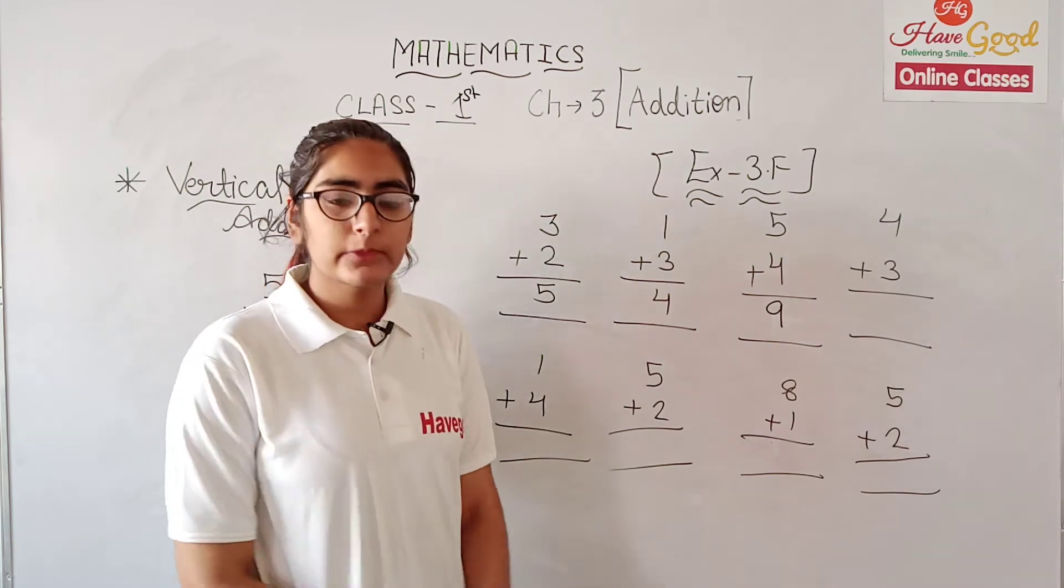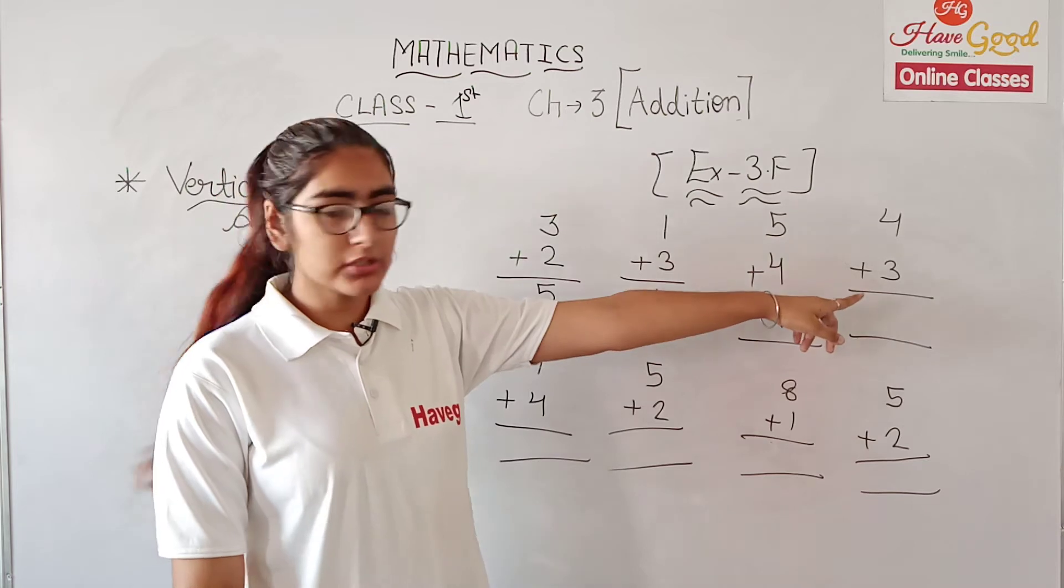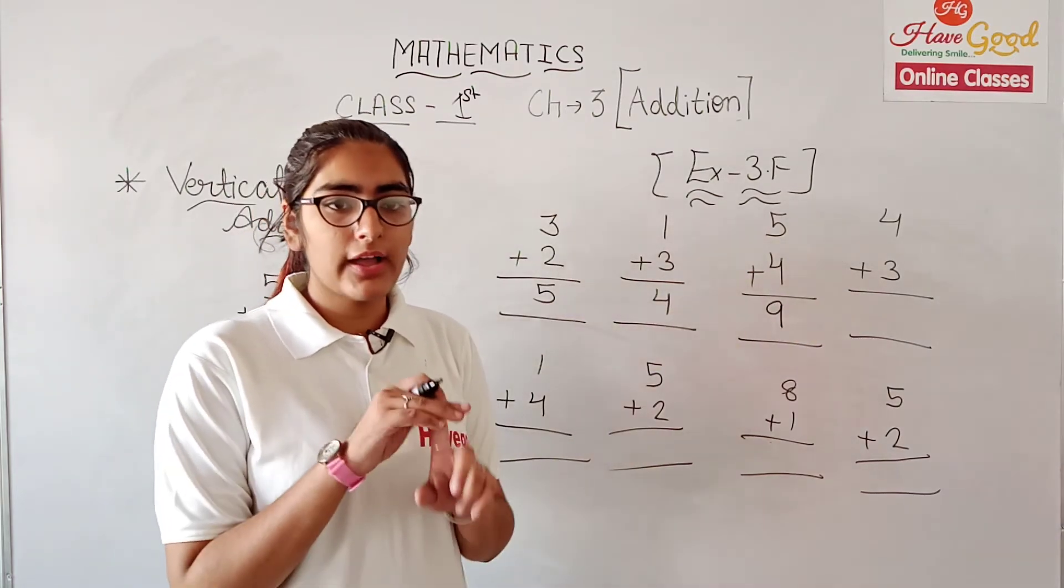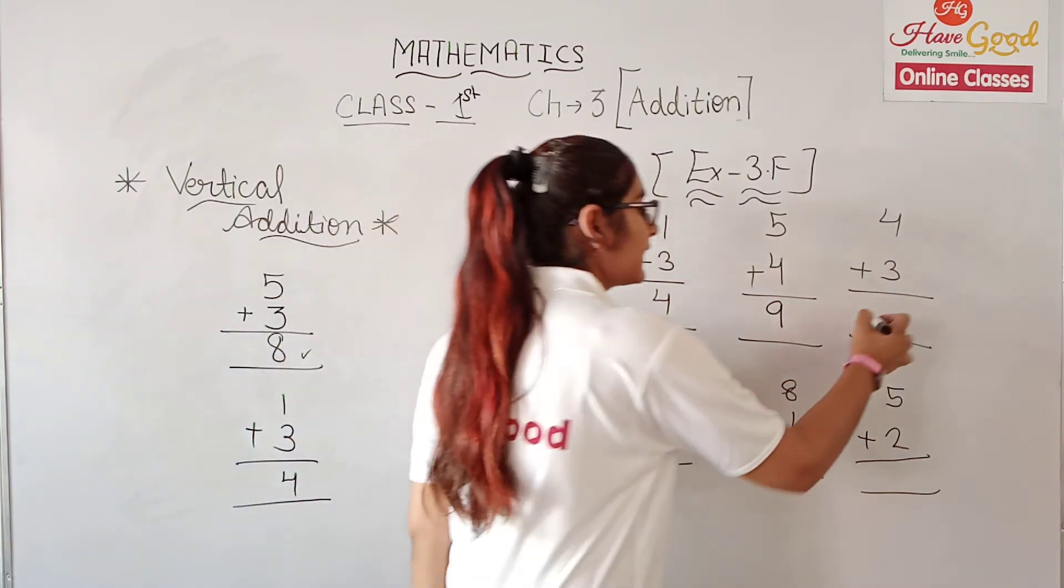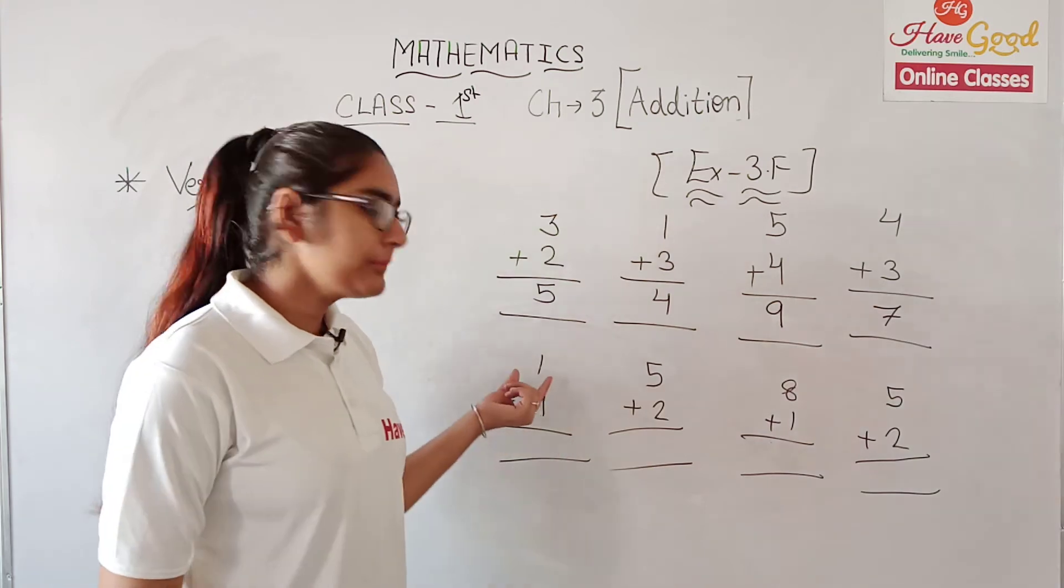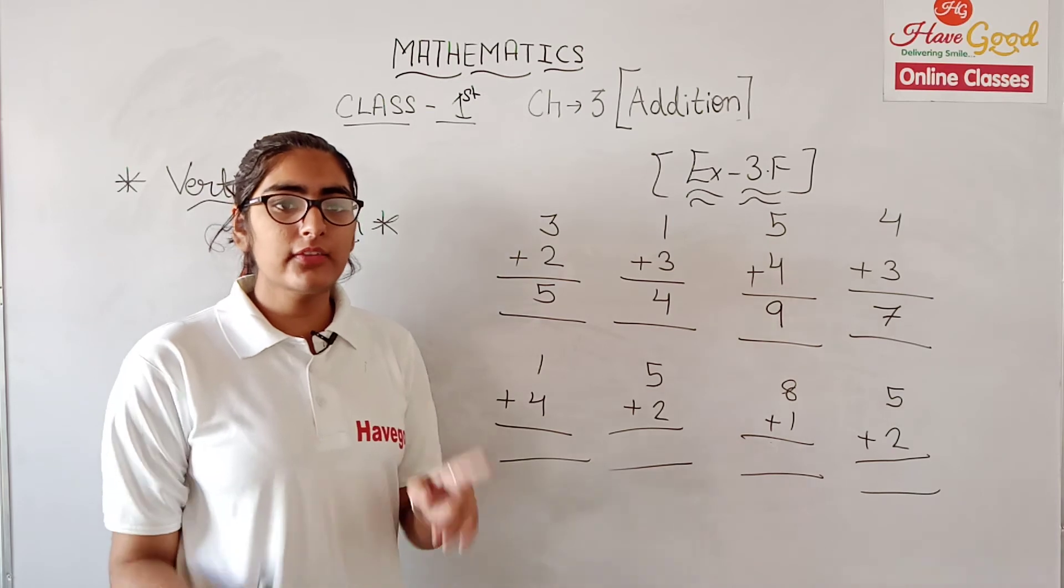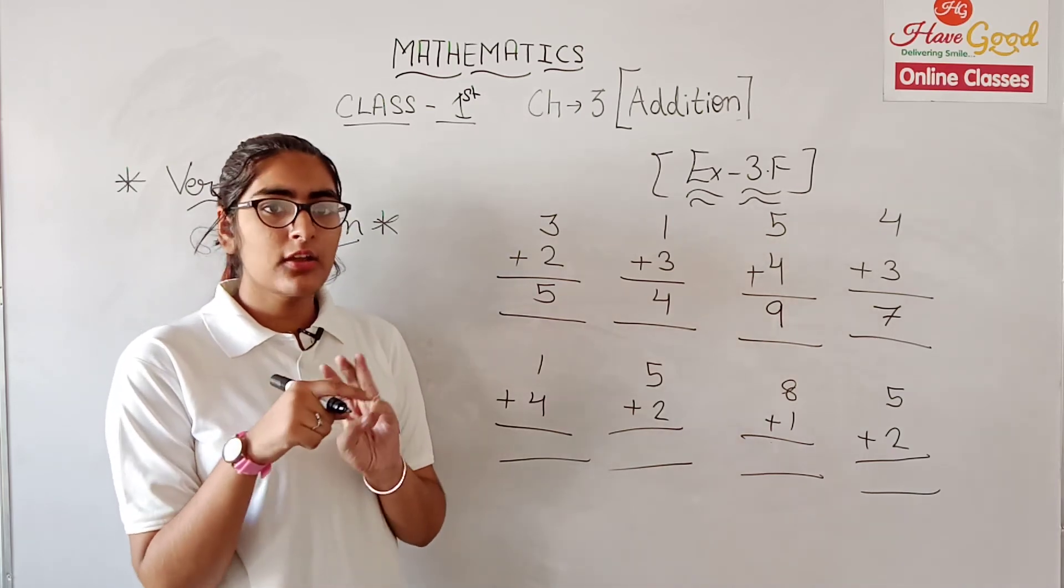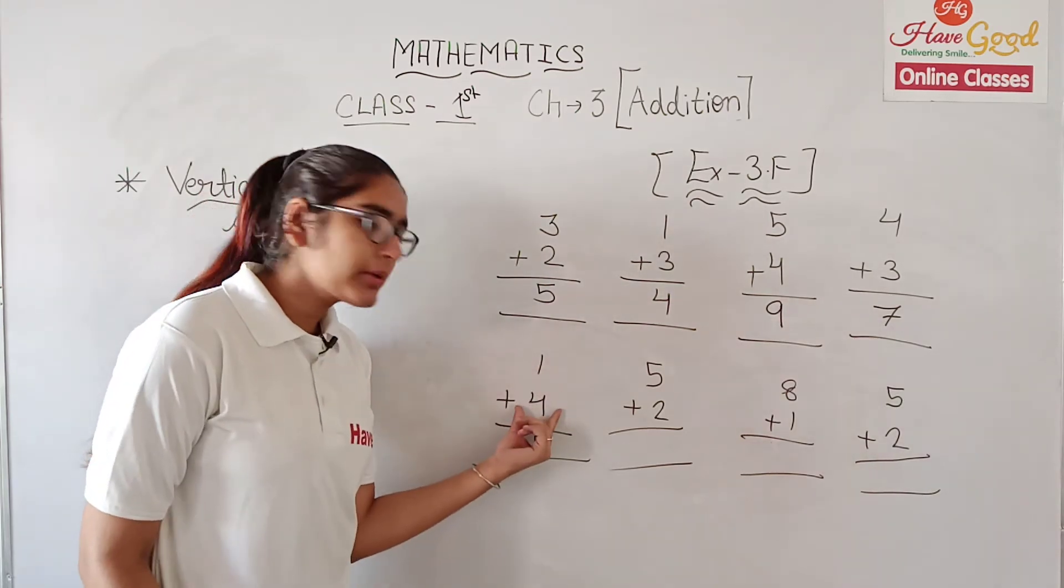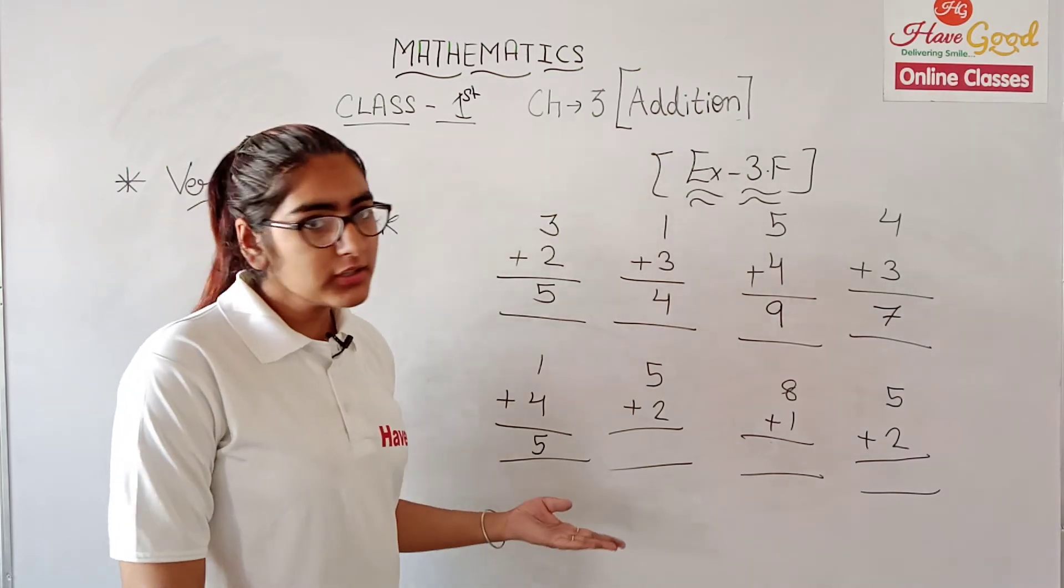Now we have 4 plus 3. 4 is our starting number. We go forward counting 3: 5, 6, 7. Then our answer is 7. When we start at 5 and forward count, our answer is 8.